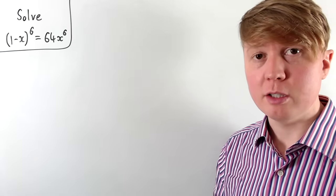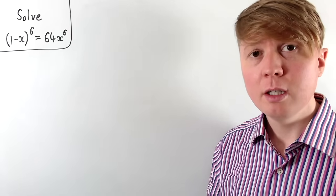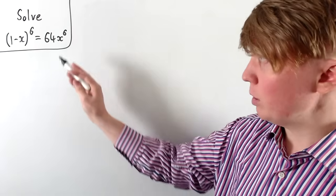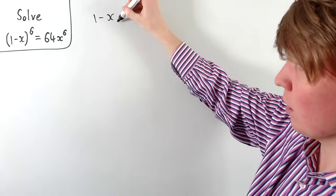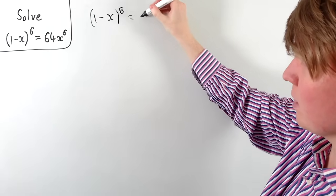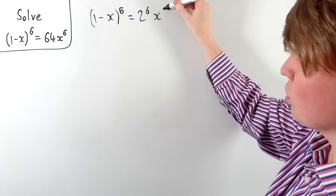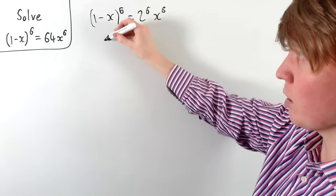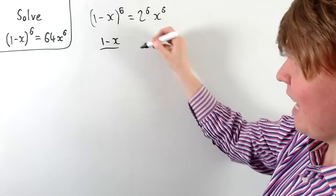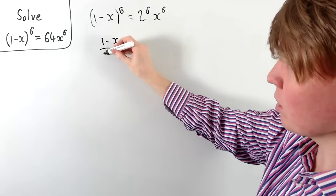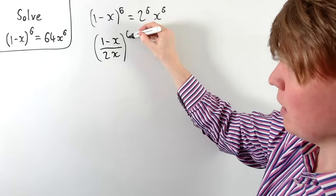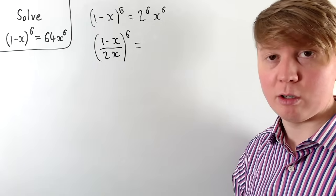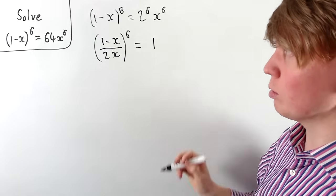We're going to find all real and complex solutions to this equation. To get started, we'll rearrange it a bit. You might spot that 64 is 2 to the power of 6. This allows us to write the equation as 1 minus x to the 6 equals 2 to the 6 times x to the 6. Dividing by 2 to the 6 and x to the 6 on both sides — noting x=0 is not a solution — gives us (1 minus x)/(2x), all raised to the power of 6, equals 1.